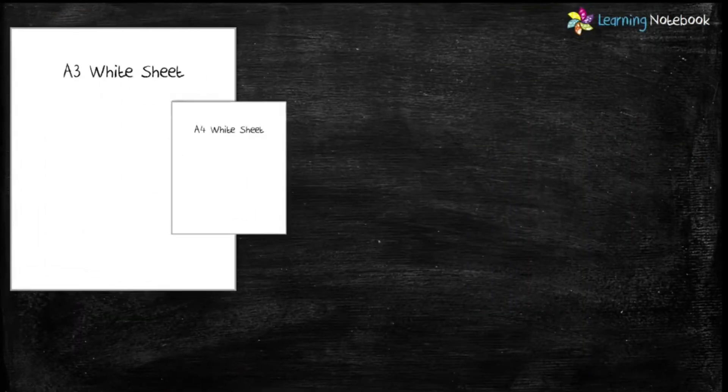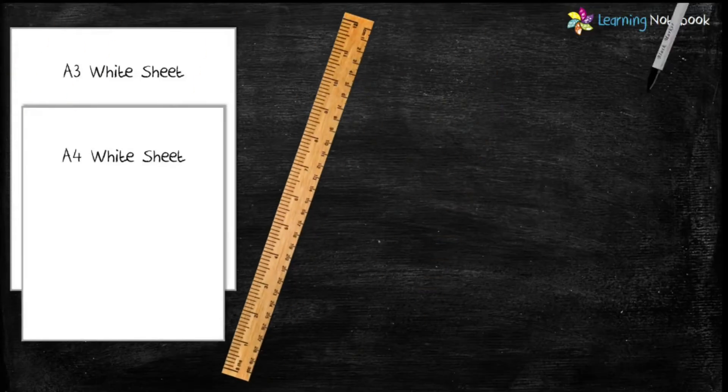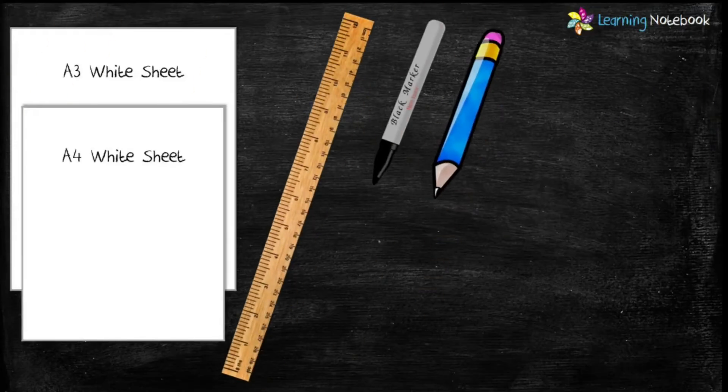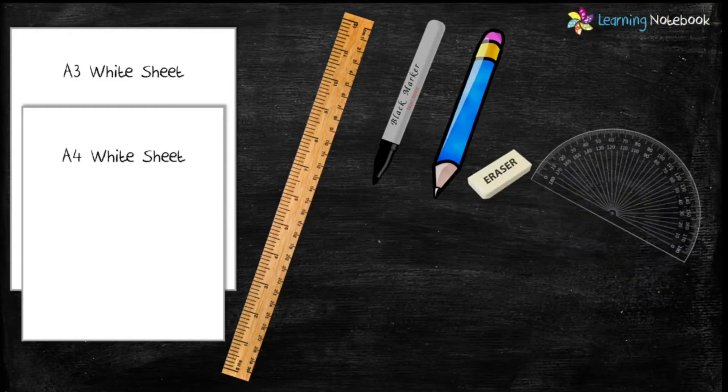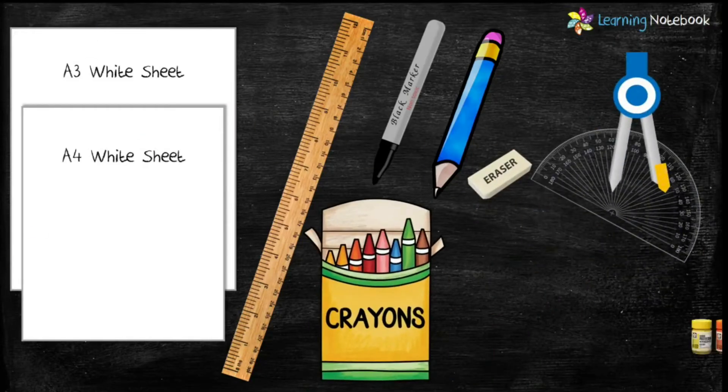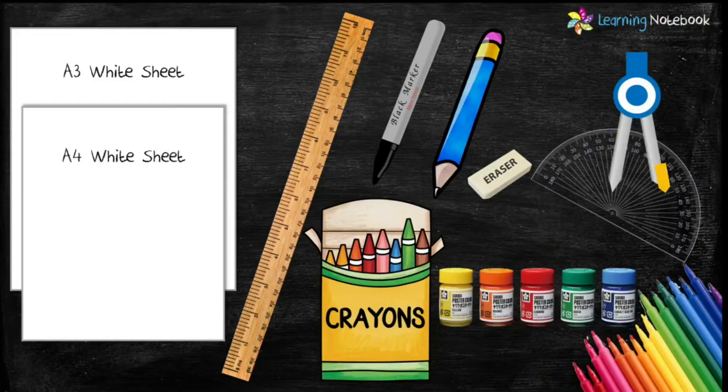For this activity we need one A3 or A4 white sheet, a ruler, a black marker pen, a pencil, an eraser, a protractor, a compass, and a few crayons or poster colors or watercolor pens.